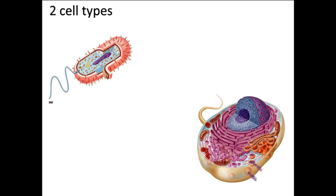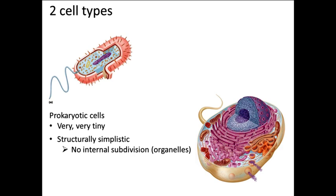There are two basic types of cells. There are prokaryotic cells that are very, very tiny and structurally simplistic with no organelles. These are bacteria and archaea.